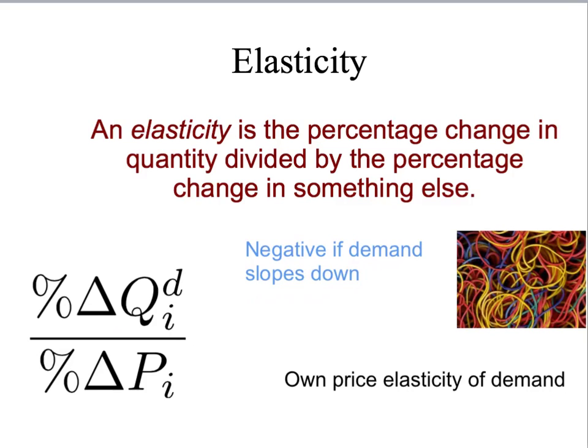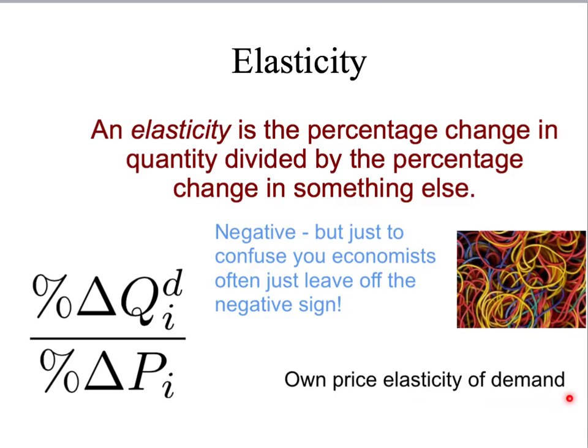So we expect our own price elasticity of demand to be a negative number. Whenever the demand curve slopes down, the own price elasticity of demand will be negative. Now, while the own price elasticity of demand is always going to be negative, economists often leave the negative sign out and refer to it as if it was a positive number. It's not — it's a negative number. Most economists will refer to the own price elasticity of demand as if it was a positive number; you just have to remember that it's always negative. Demand slopes down — if the negative sign isn't there, just put it back in yourself.